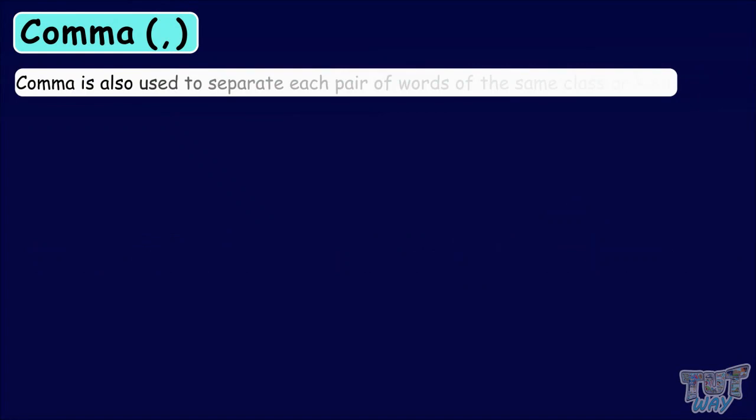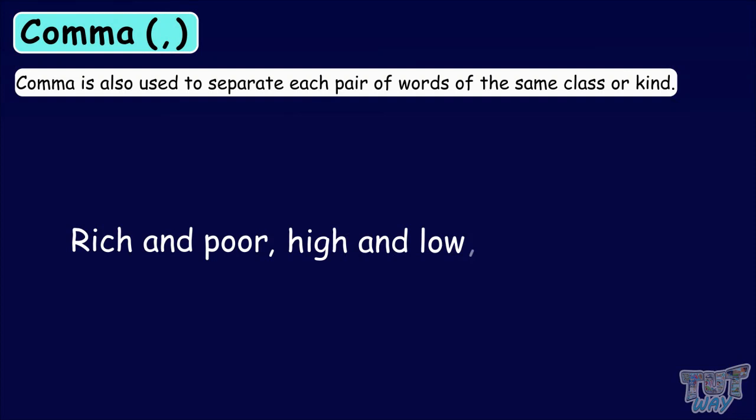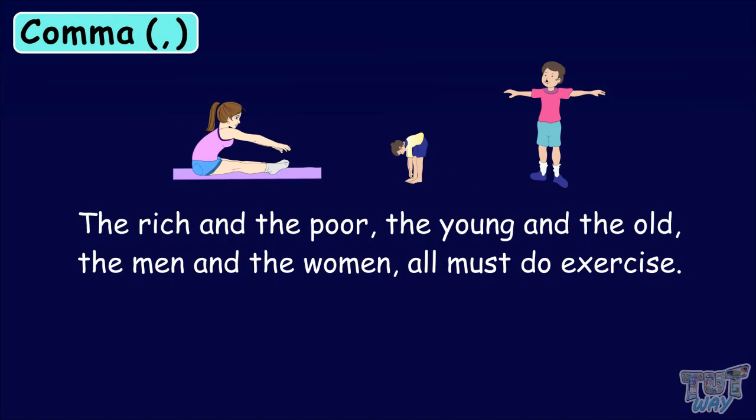Comma is also used to separate each pair of words of the same class or kind, like rich and poor, high and low, young and old. Let's learn this with the help of an example. The rich and the poor, the young and the old, the men and the women, all must do exercise. Here we have separated each pair of words of the same class with commas.